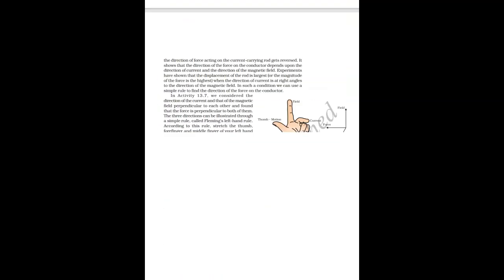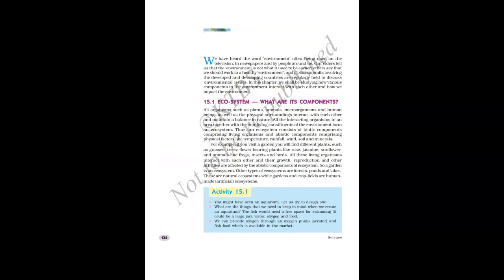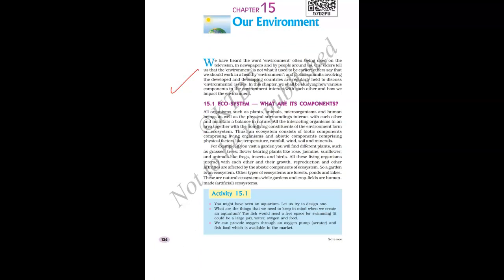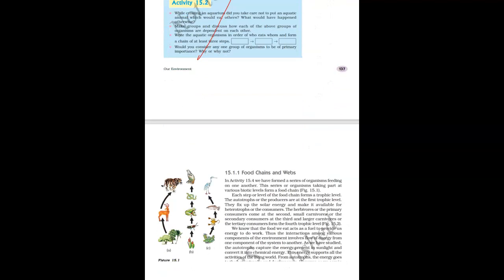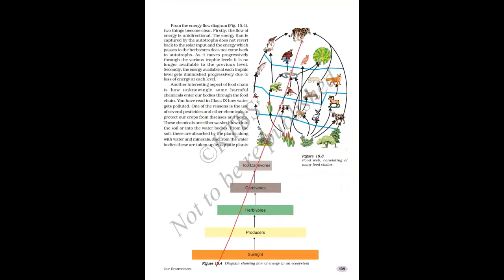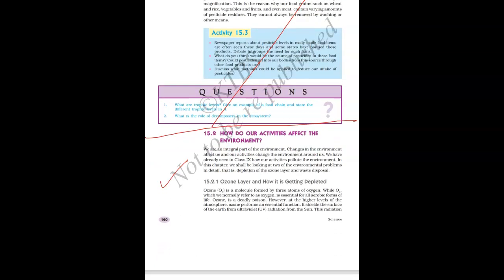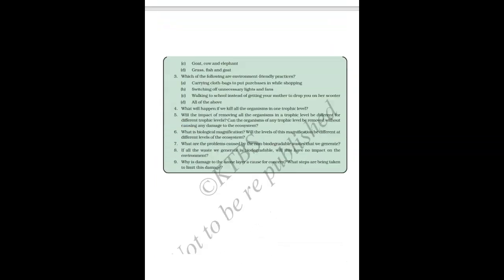Our Environment — chapter 15. You can study the introduction part. But Ecosystem section 15.1 has got deleted. The pages covering ecosystem and food chains and webs have been deleted. However, 'How do our activities affect the environment?' — you want to study this part. This is the end of Part 1.